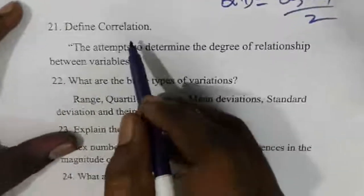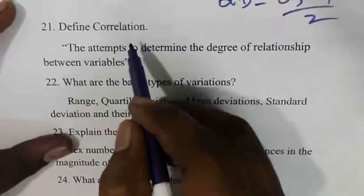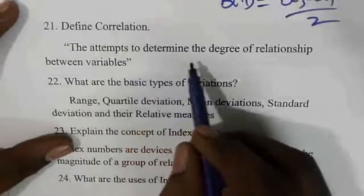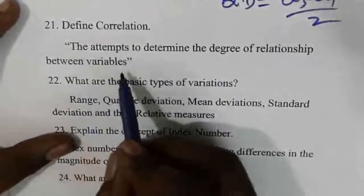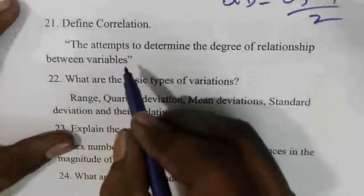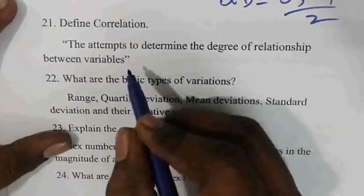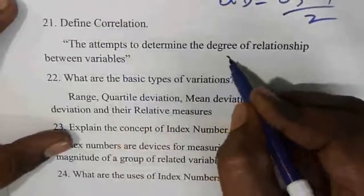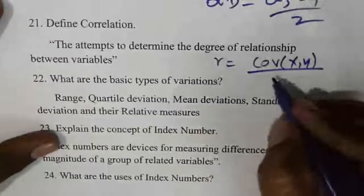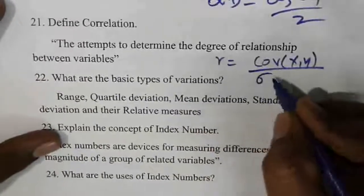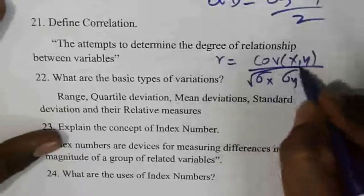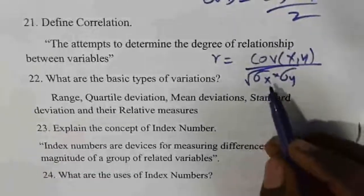Correlation is the relation between two or more variables. It is the degree of relation between variables. There are three methods. The formula is R equal to the covariance of XY divided by the standard deviation of X multiplied by the standard deviation of Y.